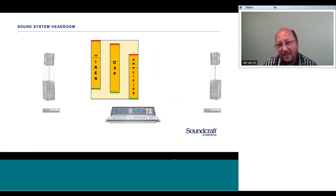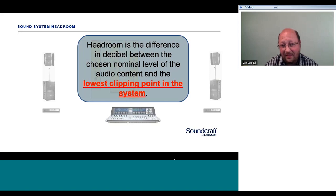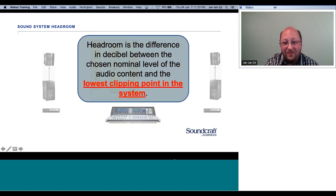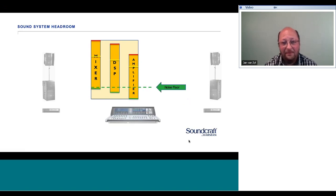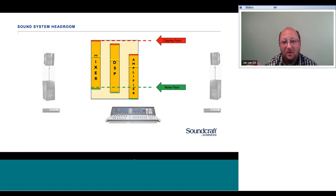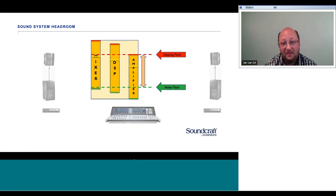When looking at the dynamic range of our system, the definition says we need to find the lowest clipping point in the system — we cannot just assume the system clipping point is when the mixer is clipping. Very often that is not the case. Standing at the mixer, looking only at the mixer, it might look like we have a decent system, but in reality the clipping point might be elsewhere. This is also quite tough to explain to guest engineers.